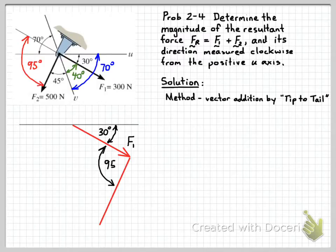So we can now draw our force F2 at 95 degrees to F1. Note that we have the tail of F2 at the tip of F1. So then our resultant FR goes from the tail of F1 to the tip of F2.